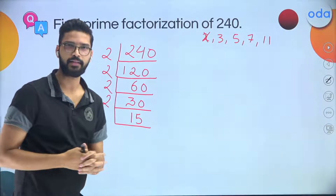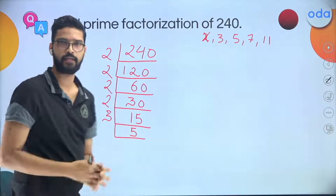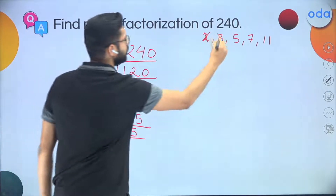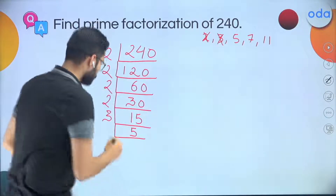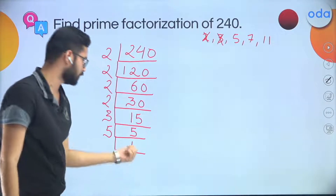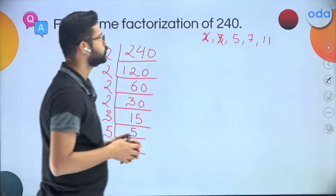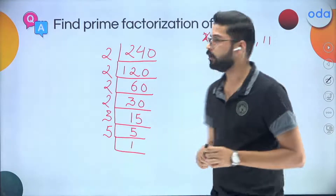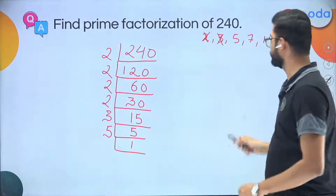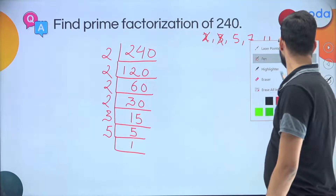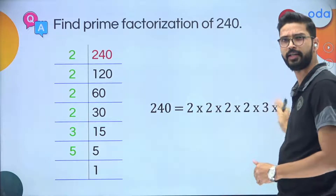Is 15 divisible by 2? No, so we strike out 2 and move to the next prime. Is 15 divisible by 3? Yes — 5 times. Is 5 divisible by 3? No. Is 5 divisible by 5? Yes — and now we have reached 1, so the process is finished. The prime factorization of 240 is 2 × 2 × 2 × 2 × 3 × 5.